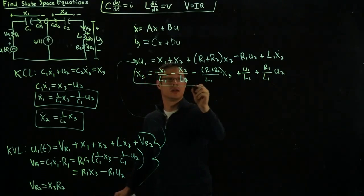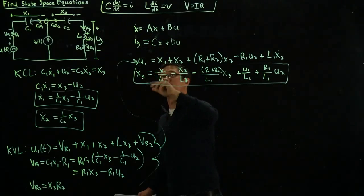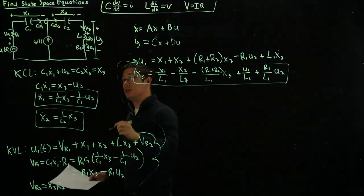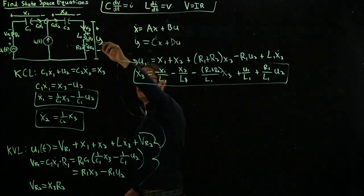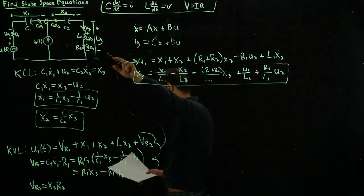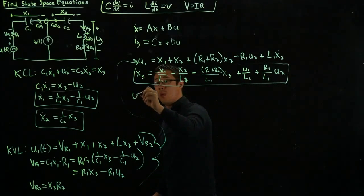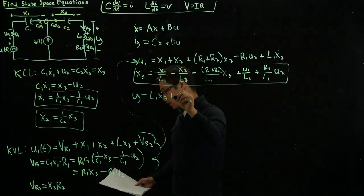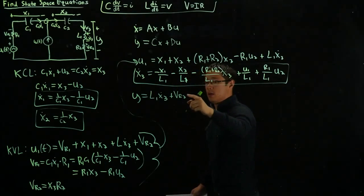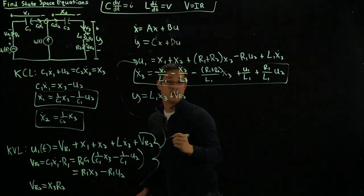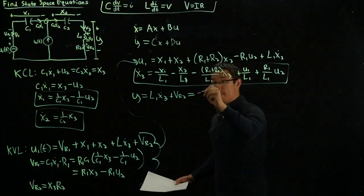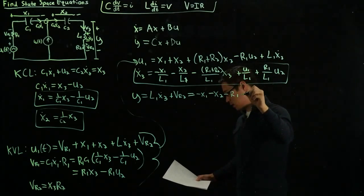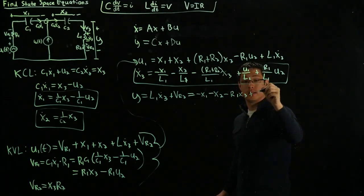So we actually can now write the top term, but before I write that out, I just simply want to write the equation for y. As we can see from here, y is the voltage across the inductor plus the voltage across the resistor R2. Writing it directly, y equals L1 x3 dot plus VR2. Making some direct substitutions, this is equal to minus x1 minus x2 minus R1 x3 plus u1 plus R2 x3.